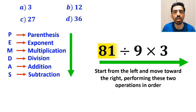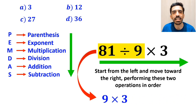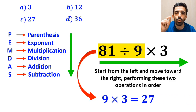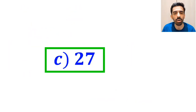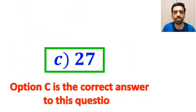So we start with the division between 81 and 9, which simplifies to 9 × 3. This finally gives us the answer 27. Therefore, option C is the correct answer to this question.